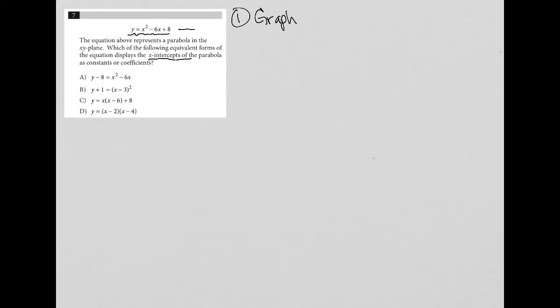So you could literally just type this in, the y equals, so you'll have y equals already on your graphing calculator. So you're just typing in the x squared minus 6x plus 8. And then your calculator will then graph that parabola,